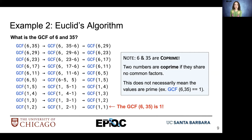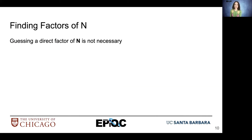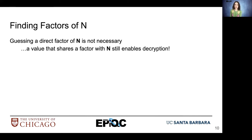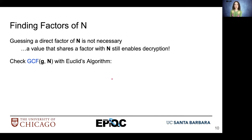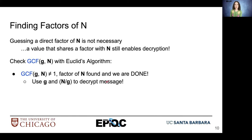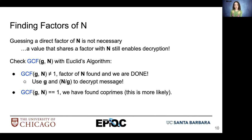For example, a factor of 6 is 3 and a factor of 35 is 5. Guessing a direct factor of n is not necessary when we're trying to factor n itself. We just saw with Euclid's algorithm that we just have to find something that shares a factor with n. It will still enable us to decrypt our secret messages. We can apply Euclid's algorithm and check if our guess g shares a factor with n. If the greatest common factor of g and n is not equal to 1 — in other words they're not co-prime — we found a factor of n and we are done. We can use g and n divided by g to decrypt our message. If the greatest common factor of g and n is equal to 1, we have found co-prime values. This is more likely, unfortunately. If we find co-primes, we need to do more processing in order to improve our guess for g.